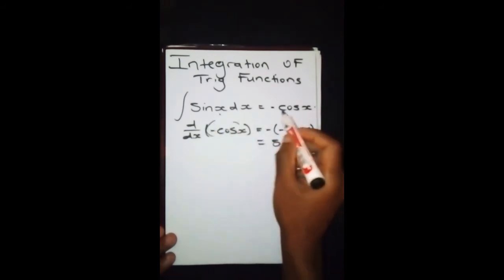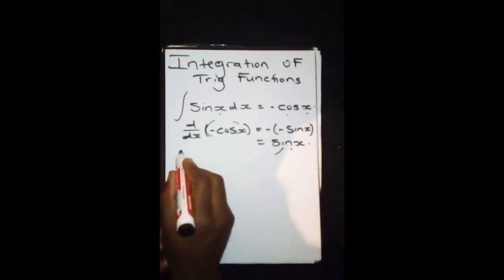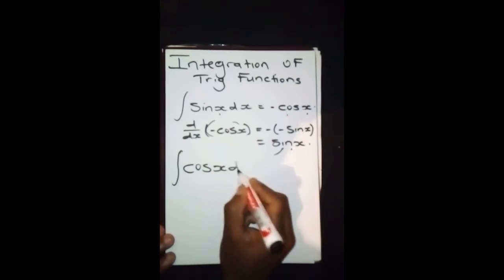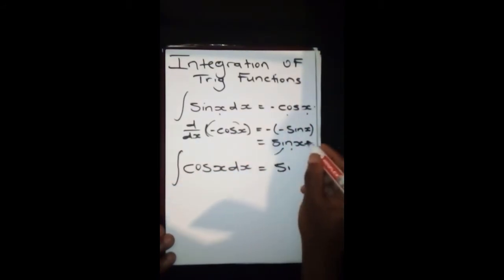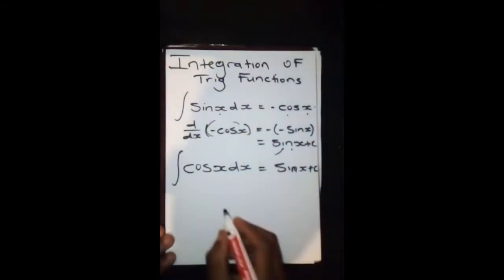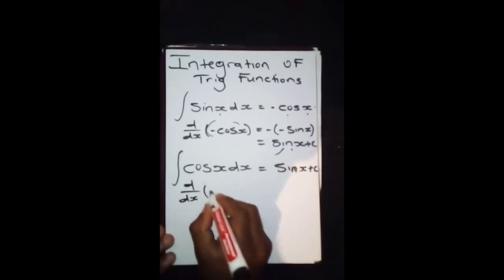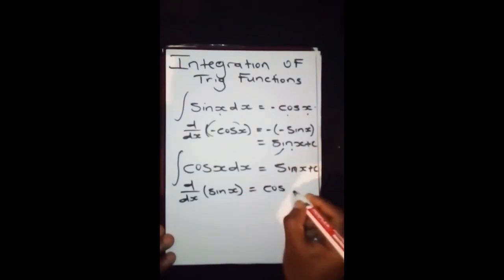And then another one: cos(x)dx. This is simply sin(x) plus C, and this is from d/dx of sin(x), which gives us cos(x).